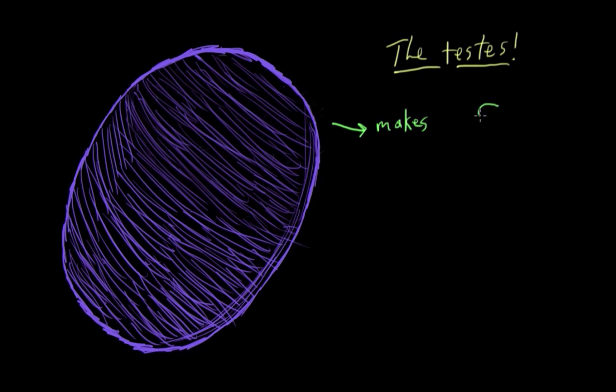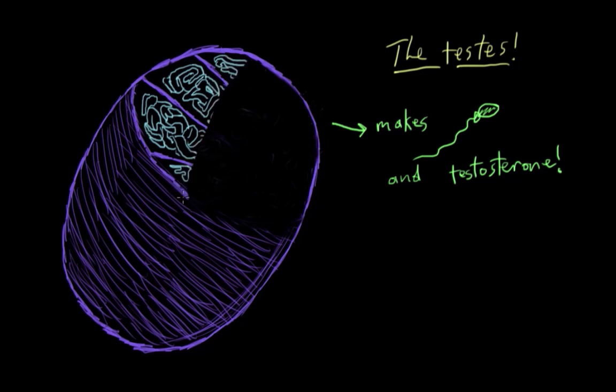First, they produce the male's contribution to a baby, which is his sperm. Second, they make the majority of the major male hormone, testosterone. But we'll really only discuss the sperm production role for now. So let's look inside the testes and see what we find.